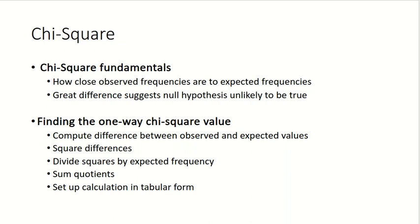To find the one-way chi-square value, we need to compute the differences between the observed and expected values, square those differences, then divide by the expected frequencies, take the sum of the quotients, and set up a calculation in tabular form.